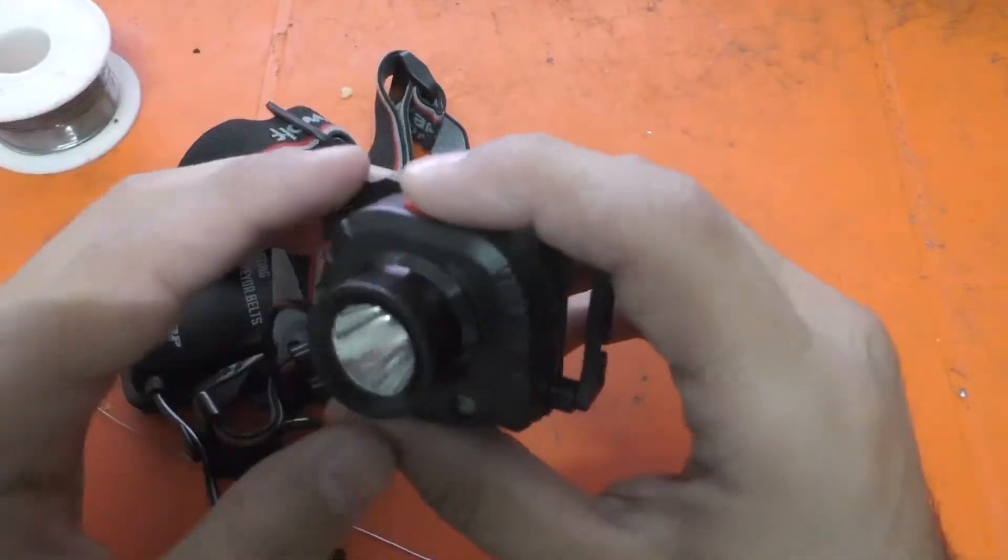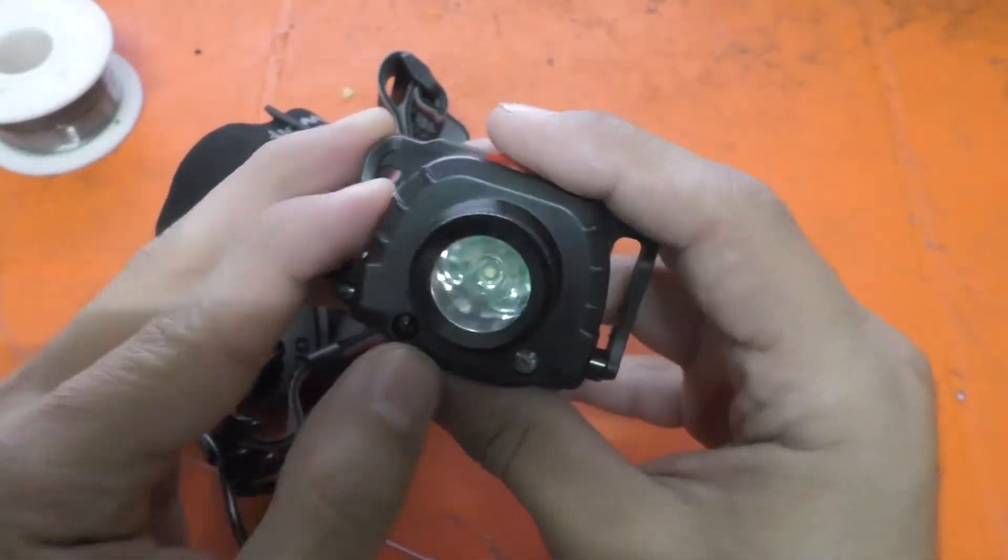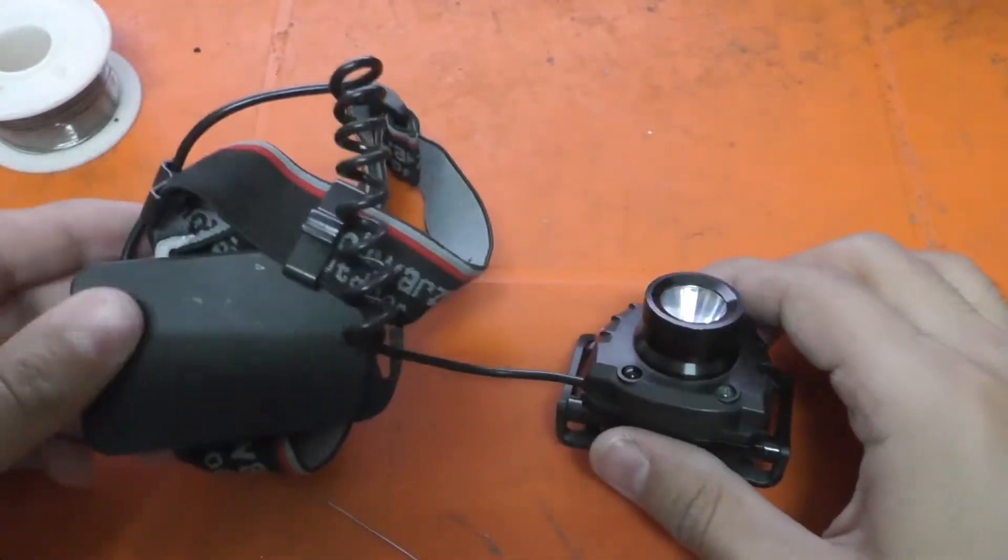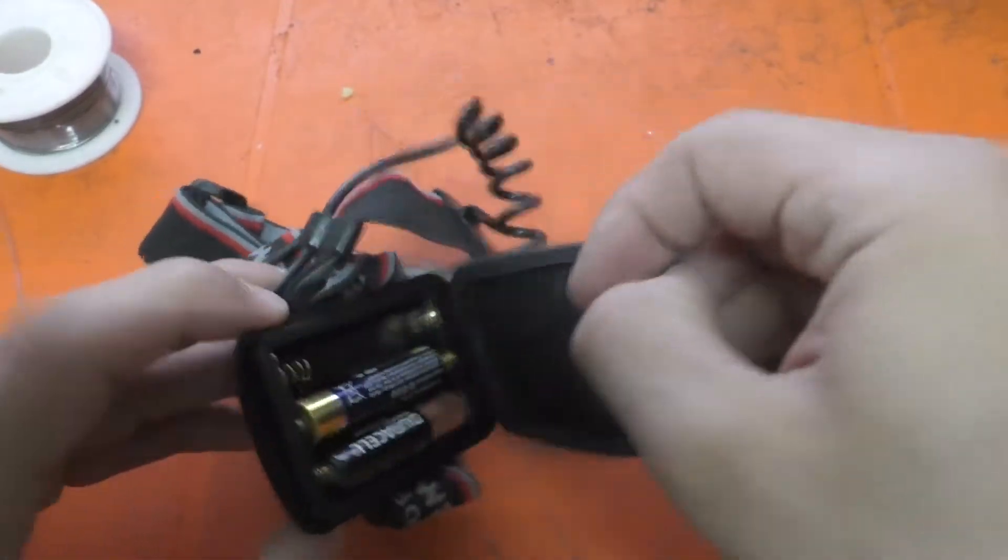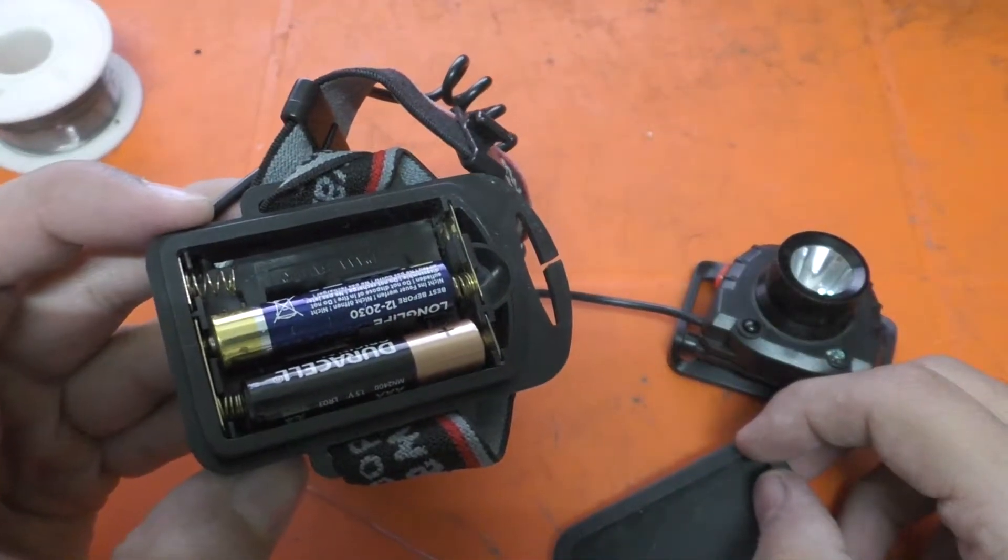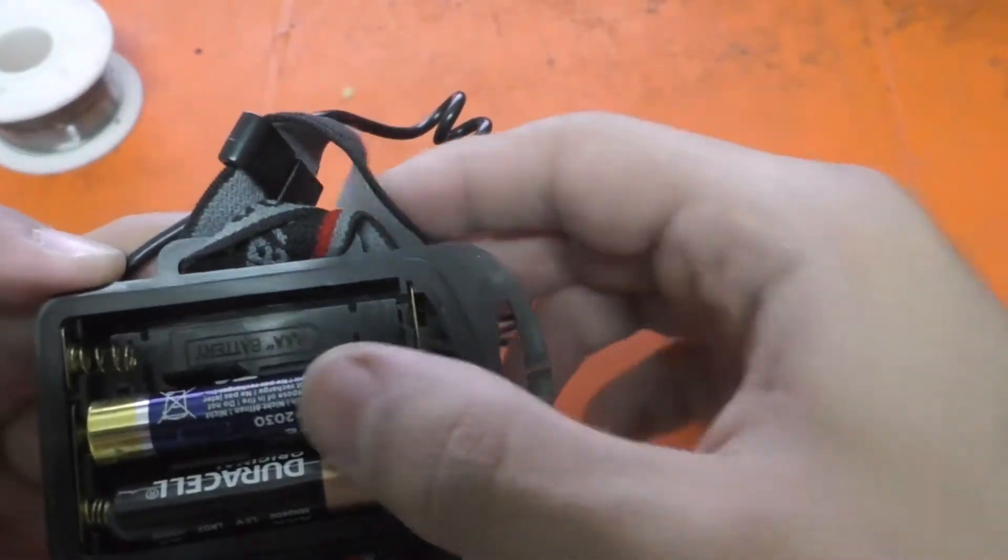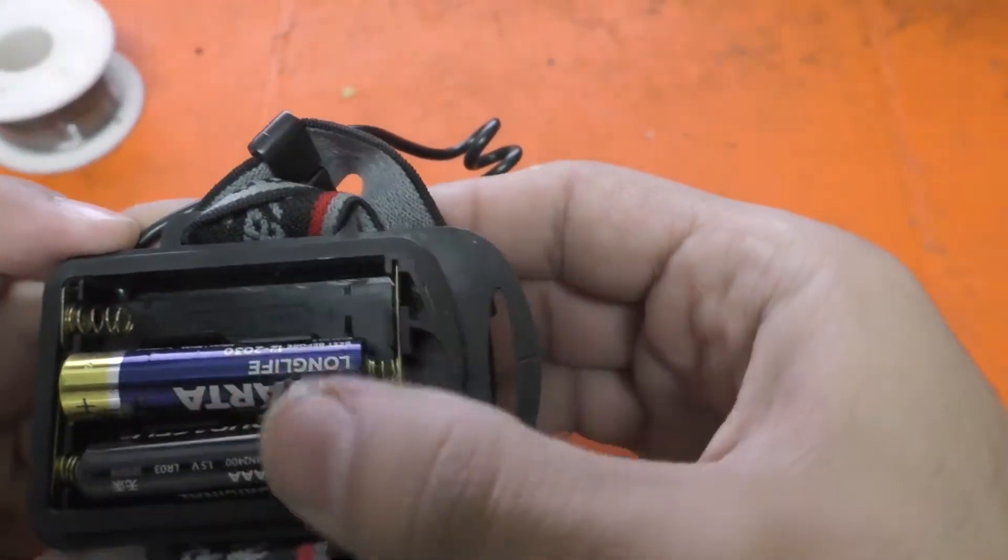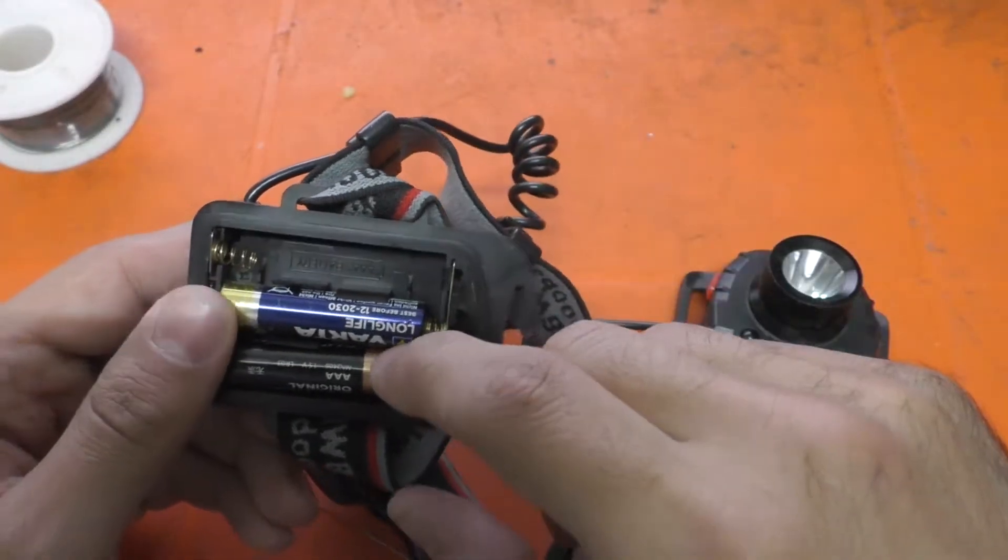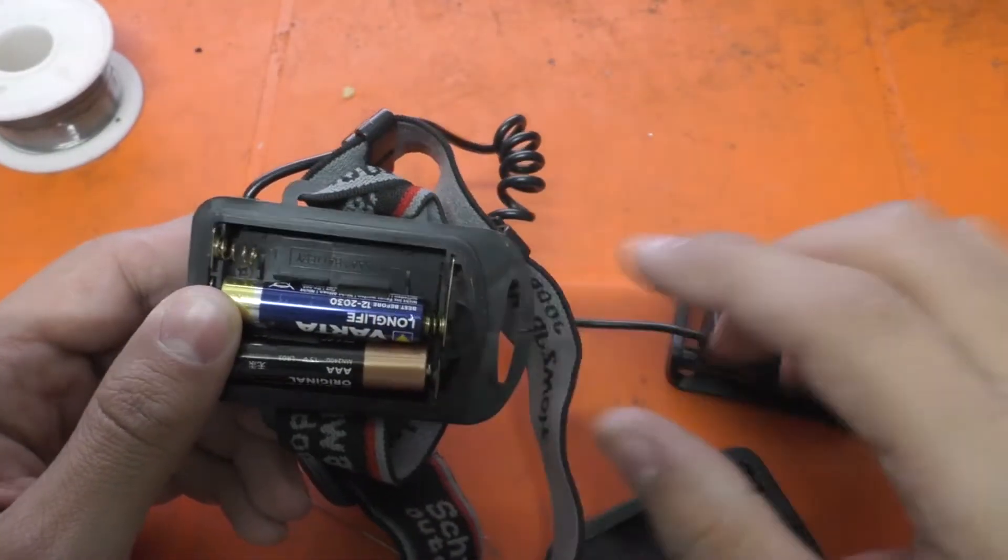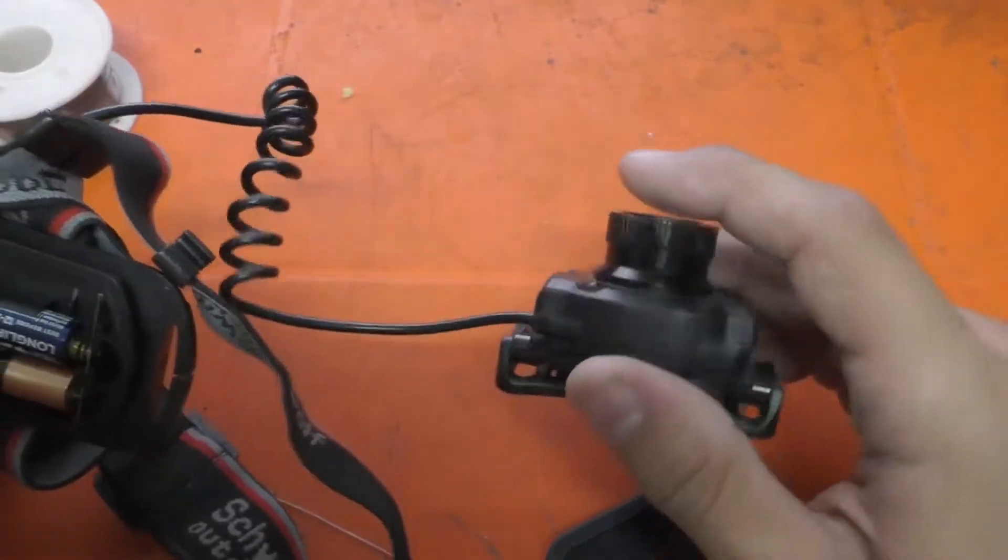Now first of all, as you can see, nothing works. This thing operates by using batteries like this—triple A batteries. I have checked the batteries and they are working fine, so let's start by opening this thing up.